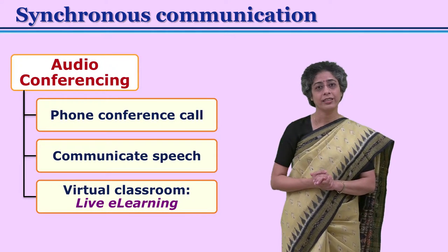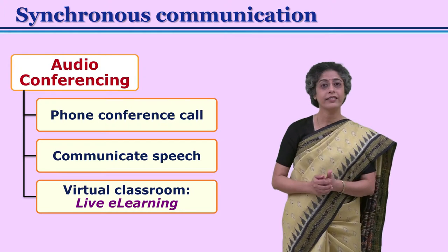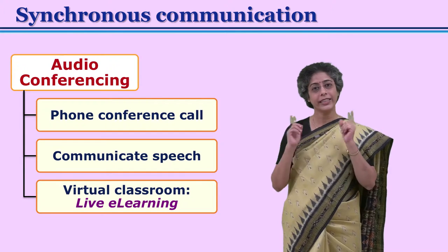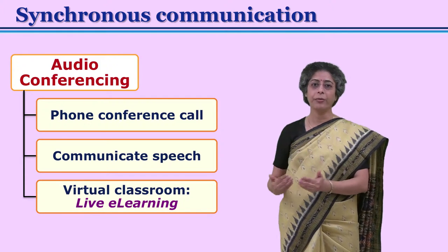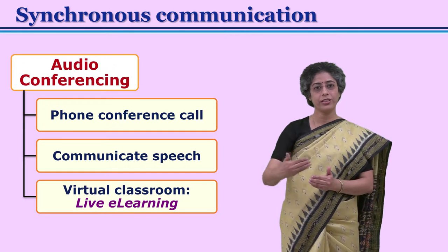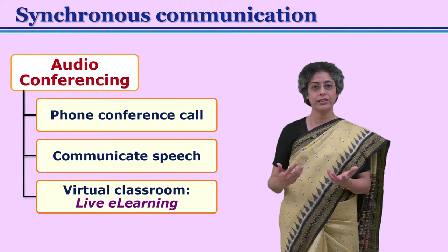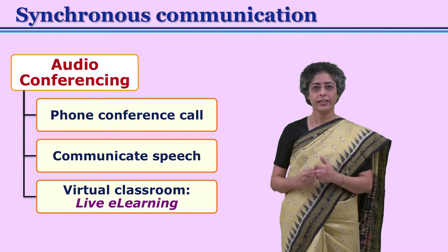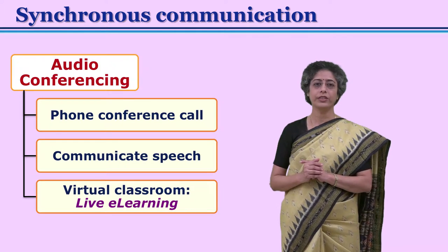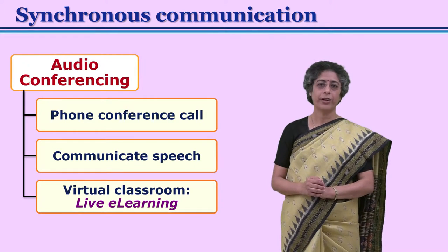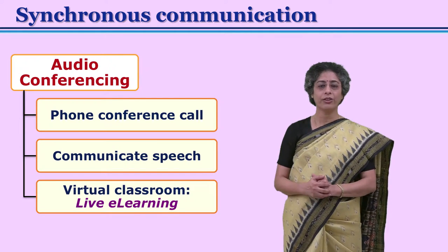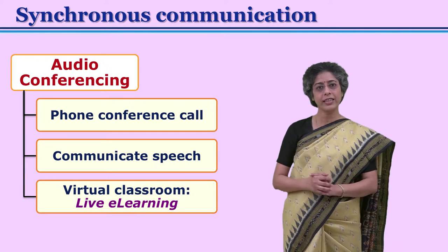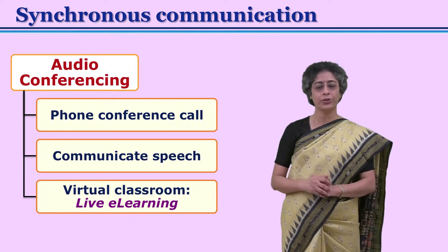In audio conferencing, when people call each other, there are necessarily more than two persons involved. They all discuss, they all can hear each other, and they can have a formal discussion. If a teacher is planning audio conferencing, a few students — say five or six — and the teacher can come online, get connected through audio conferencing, and discuss a learning point. If, along with audio conferencing, visuals are added — if persons can see each other — then that can be considered as video conferencing.